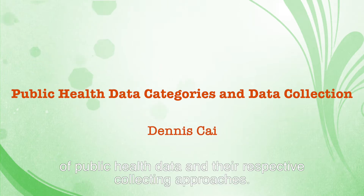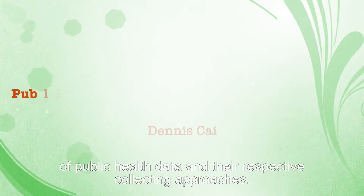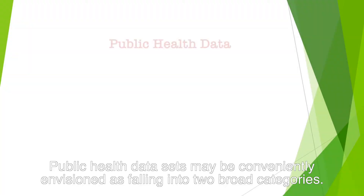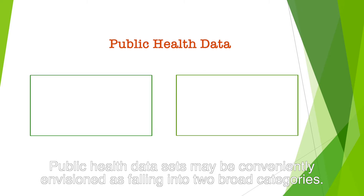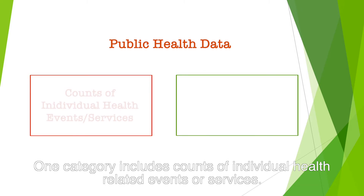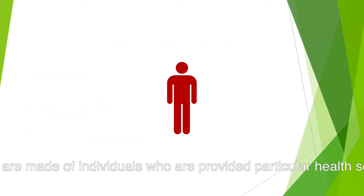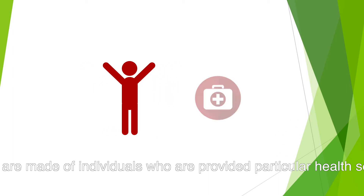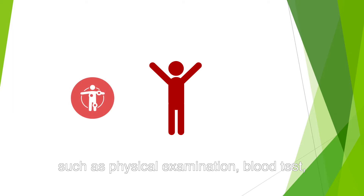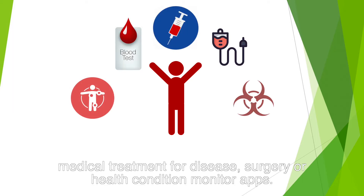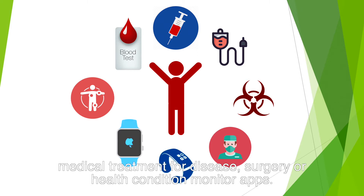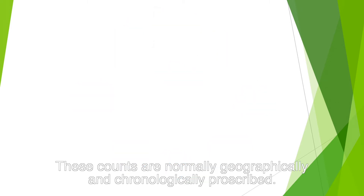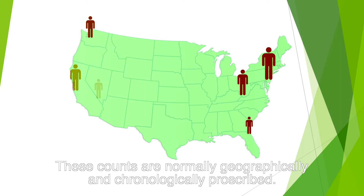Public health datasets may be conveniently envisioned as falling into two broad categories. One category includes counts of individual health-related events or services. Counts are made of individuals who are provided particular health services, such as physical examination, blood test, medical treatment for disease, surgery, or fitness apps. These counts are normally geographically and chronologically prescribed.